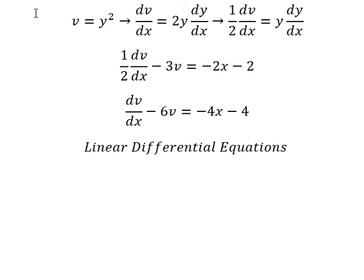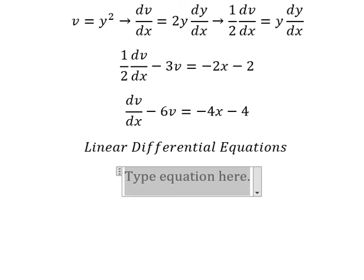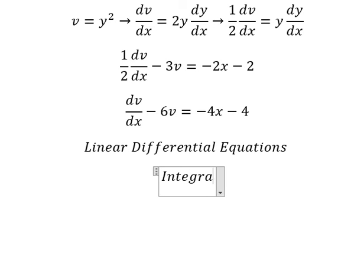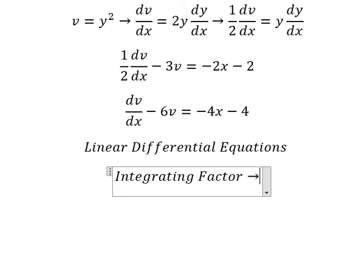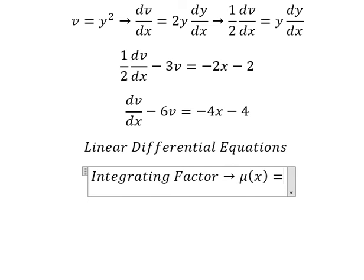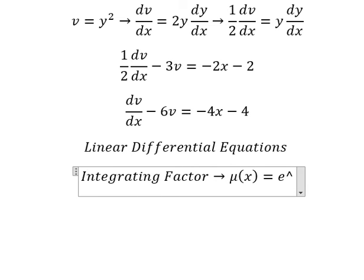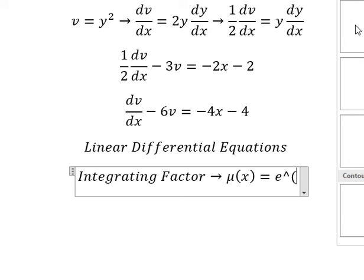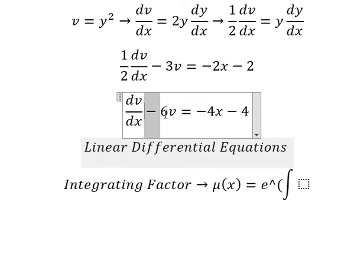Next we have v and the derivative of v, so this is now a linear differential equation. We can use the integrating factor. We need to find mu(s) equal to e to the power of the integral. We see that negative 6 is next to v, and that is for the integrating factor.